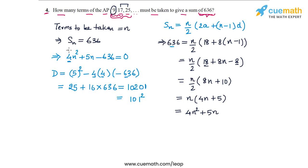Now if we apply the quadratic formula to this quadratic equation, we get N equals minus 5 plus minus 101 by 8. These are the two roots of N. If I take the plus sign, I get minus 5 plus 101 by 8, so that's 96 by 8. If I take the minus sign, I get minus 5 minus 101 by 8, which is minus 106 by 8.